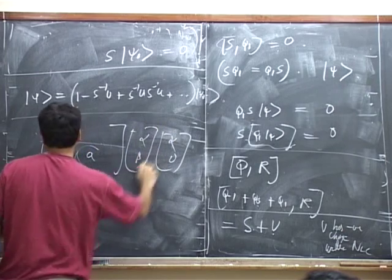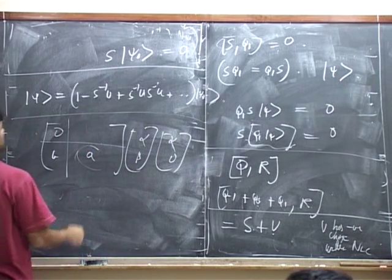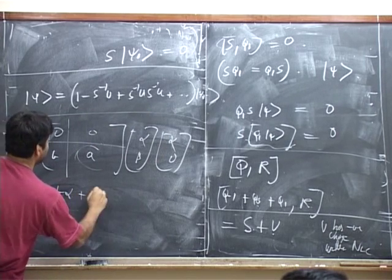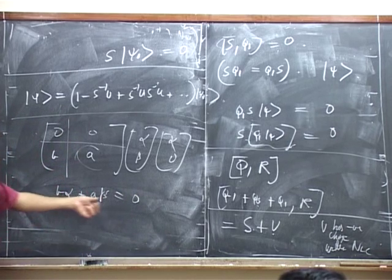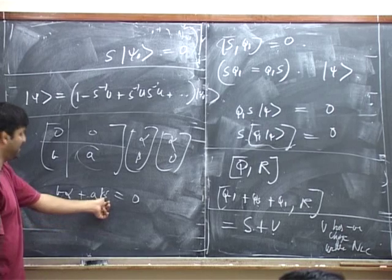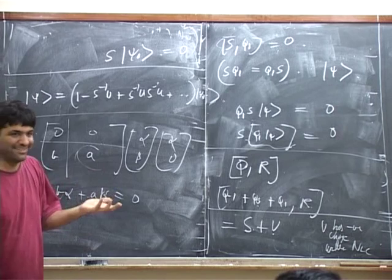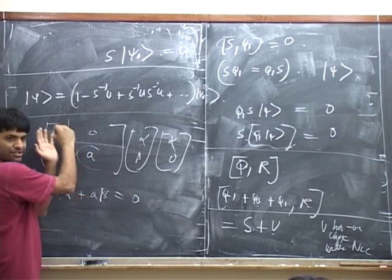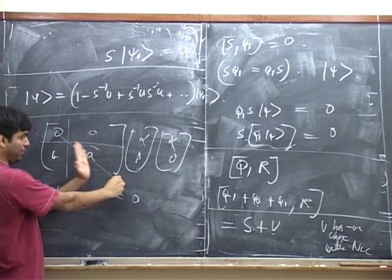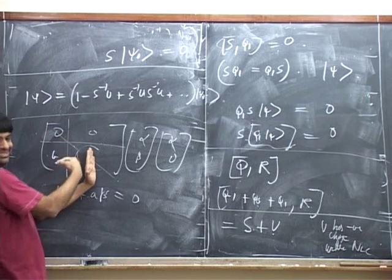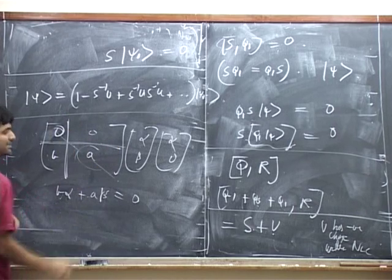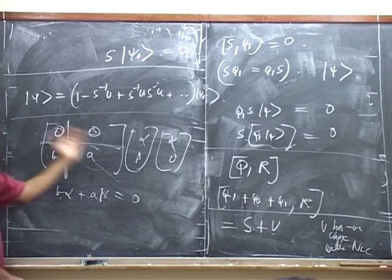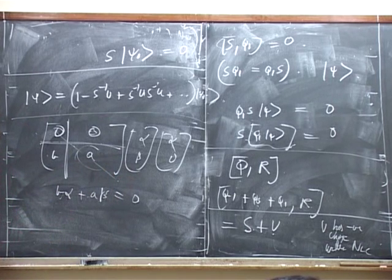In order to find the kernel, look at the vector (alpha, beta). The first condition gives nothing. The second condition gives B alpha plus A beta equals 0. So you choose alpha freely, and beta is determined: beta equals minus B alpha over A. Since A is not equal to 0, this is well-defined. So if you have a lower triangular matrix where the diagonal block away from the zero is invertible, there is a one-to-one map between the kernel of this matrix and the kernel of the operator A.